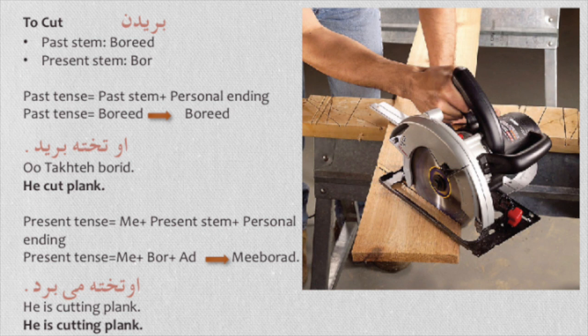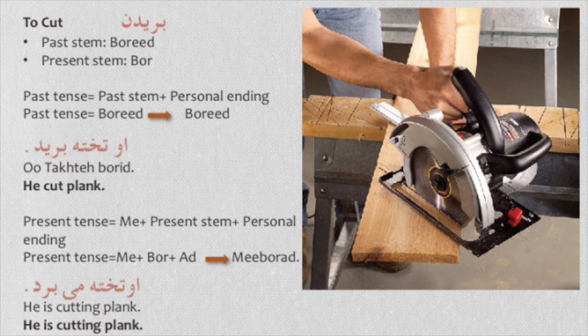The tenth and last verb is boridan — to cut. The past stem is 'borid' and the present stem is 'bor'. For the past tense, for the third person (he or she), no personal ending is needed: 'borid'. U tahte borid — he cut the plank. For the present tense, we need 'me' plus present stem 'bor' plus 'ad': mi borad. U tahte mi borad — he is cutting the plank.